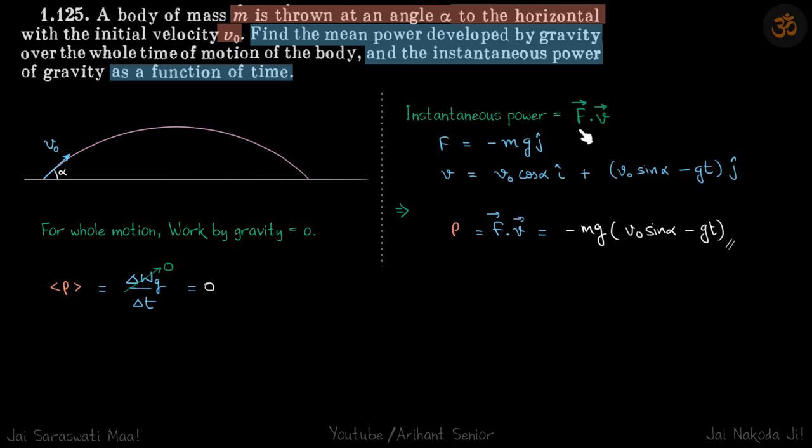Instantaneous power is f dot v. F in this case is minus mg j cap, and v at time t is v0 cos alpha i cap plus v0 sin alpha minus gt j cap. So this is constant and this is a function of time. When we do f dot v, we get minus mg times v0 sin alpha minus gt, which is our instantaneous power at time t.